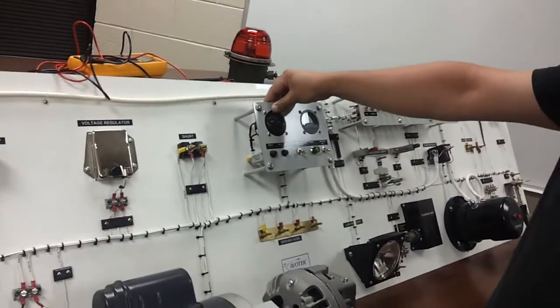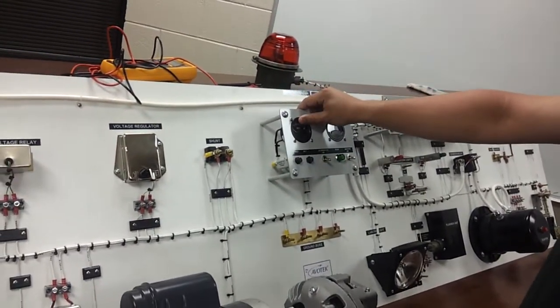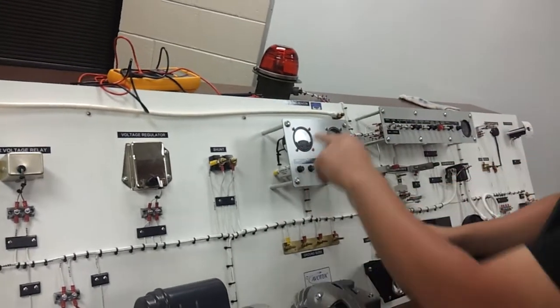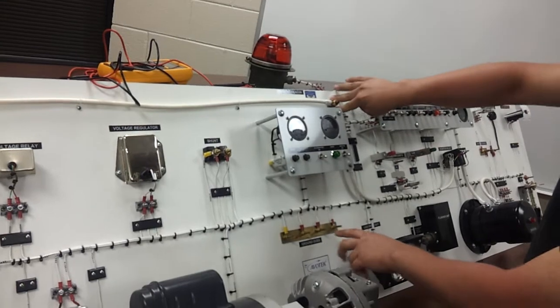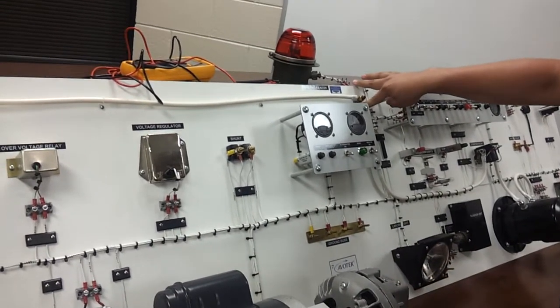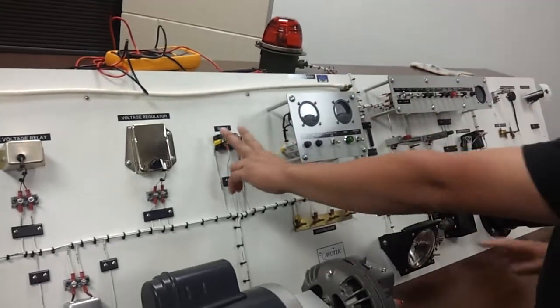Your voltmeter measures the voltage across your ground bus and your power bus. The ammeter is across your shunt.